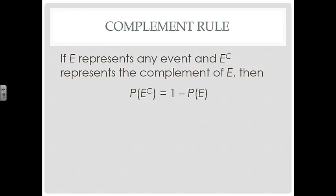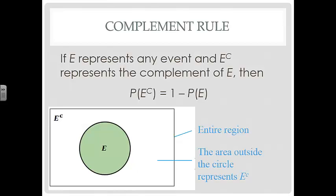Looking at a Venn diagram: the rectangle represents the entire sample space of all possible outcomes. Inside the circle is the event E occurring, and the white space inside the rectangle but outside the circle is the complement of E. Everything inside the rectangle represents all possible events, so the total probability must equal 1. Anything that is not event E is its complement, which is why the probability of the complement equals 1 minus the probability of the event.